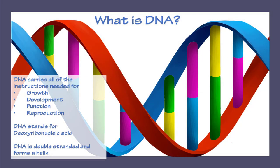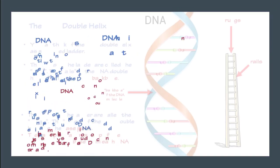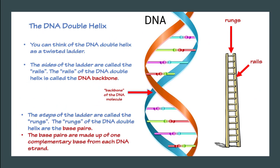DNA carries all of the instructions needed for growth, development, function, and cellular reproduction. DNA stands for deoxyribonucleic acid. DNA is double-stranded and forms a helix. You can think of the DNA double helix as a twisted ladder. The sides of the ladder are called the rails, and the rails of the DNA double helix are called the DNA backbone.